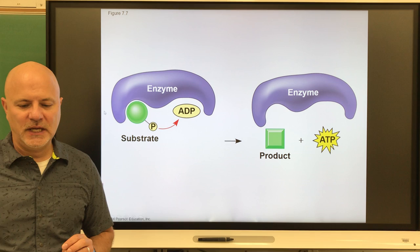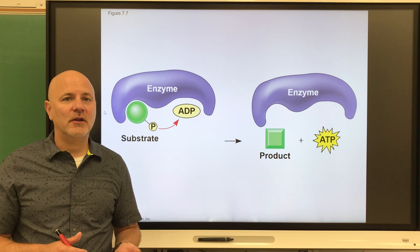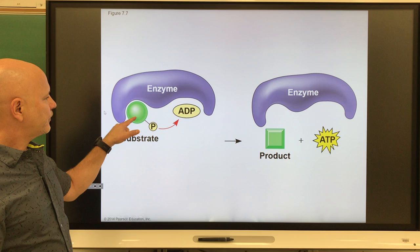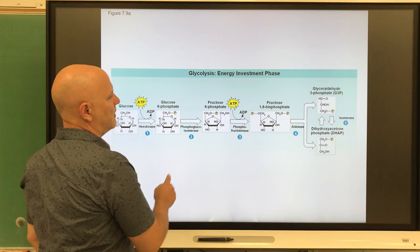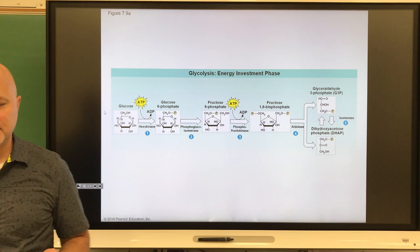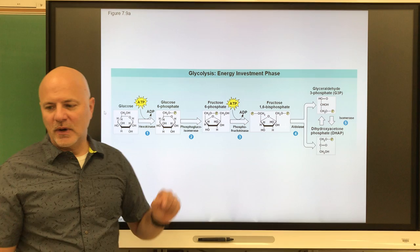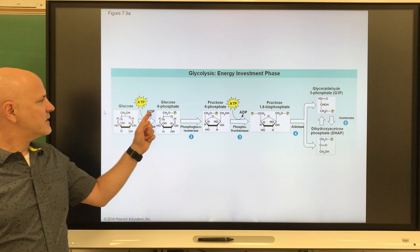Glycolysis uses substrate-level phosphorylation — a formation of ATP when a phosphate group is transferred from an organic molecule onto ADP. We take the phosphate off an organic molecule and add it onto ADP to make ATP. The first part of glycolysis is the energy investment phase: we take three reactions starting with glucose and add energy onto that glucose, using two ATP — we actually burn some ATP here.